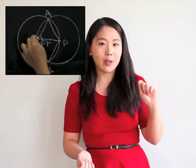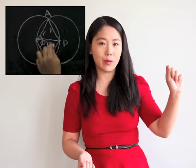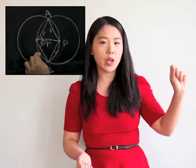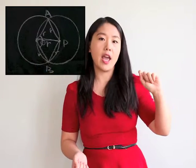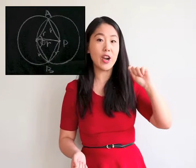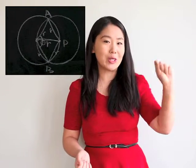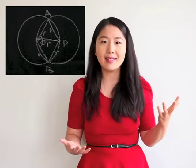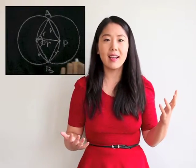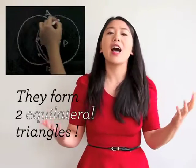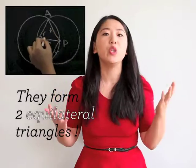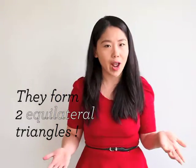I look at this and I see there's a radius right here from O to P, and a radius from O to A and P to A, and O to B and P to B. I see that these are not just lines, but rather lines of two equilateral triangles.